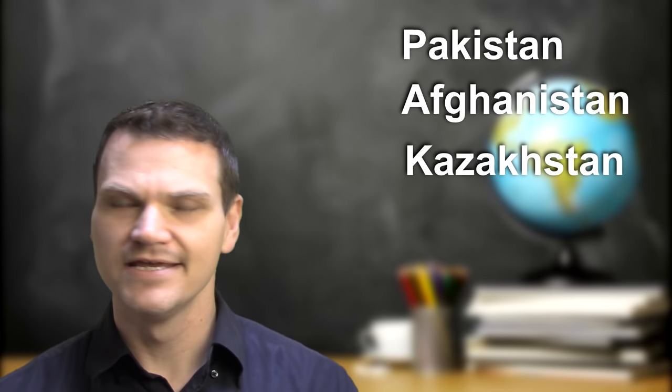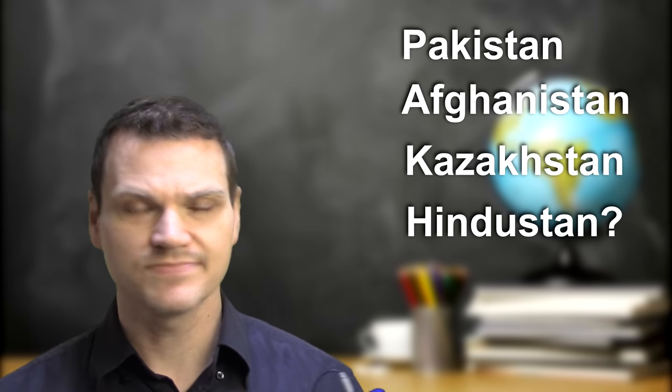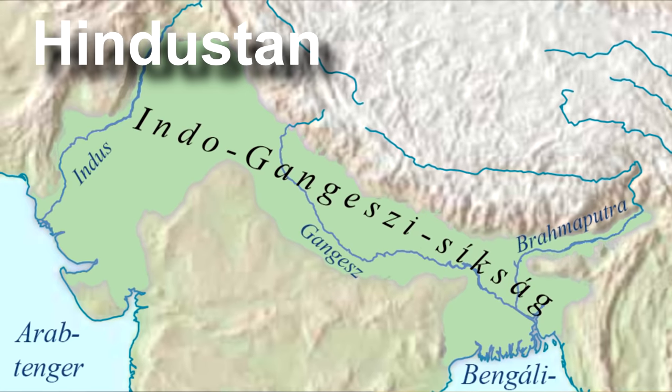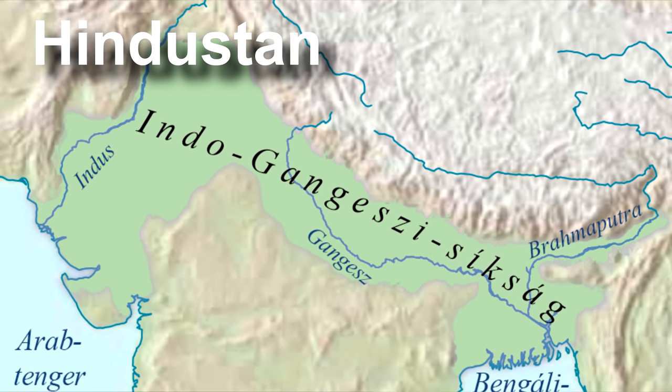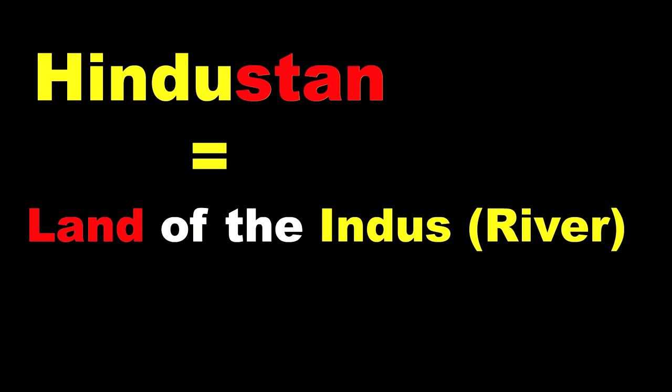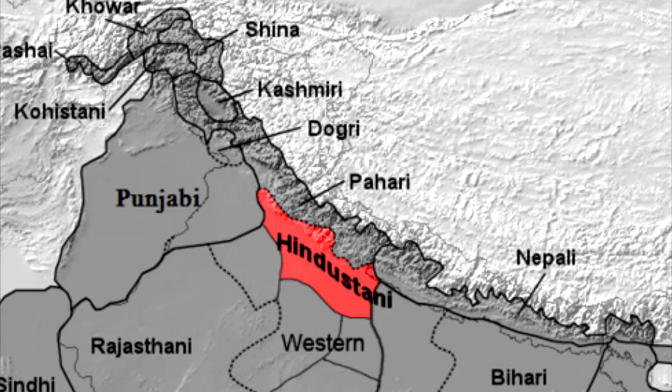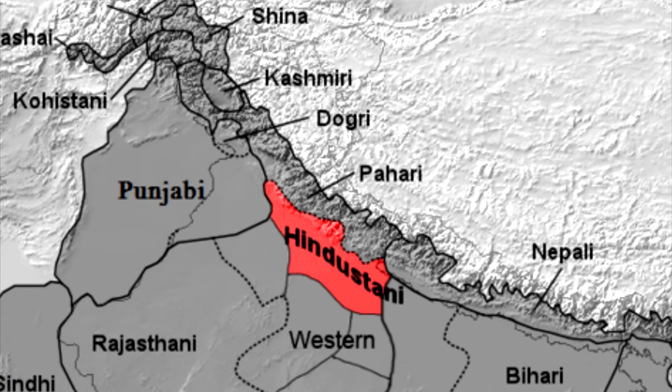There are countries with names like Pakistan, Afghanistan, Kazakhstan. Is there a country called Hindustan? Well, kind of. At certain points throughout history, the term Hindustan has been used to refer to all of India, but more generally it is used to refer to the area of the northern Indian subcontinent. The term Hindustan itself is a Persian term meaning the land of the Indus River. Hindustani is a language that arose in the Hindustan region.